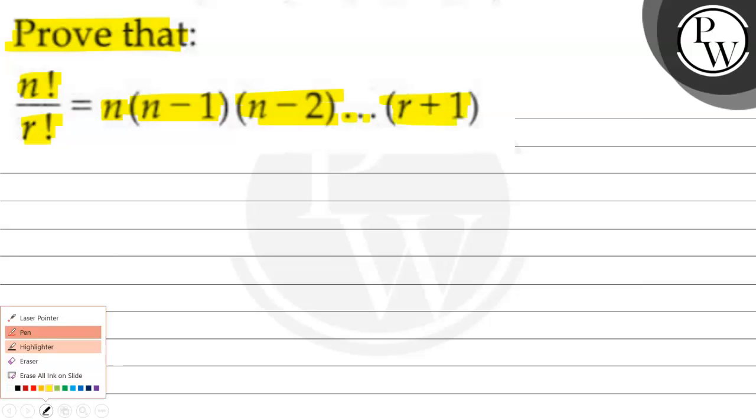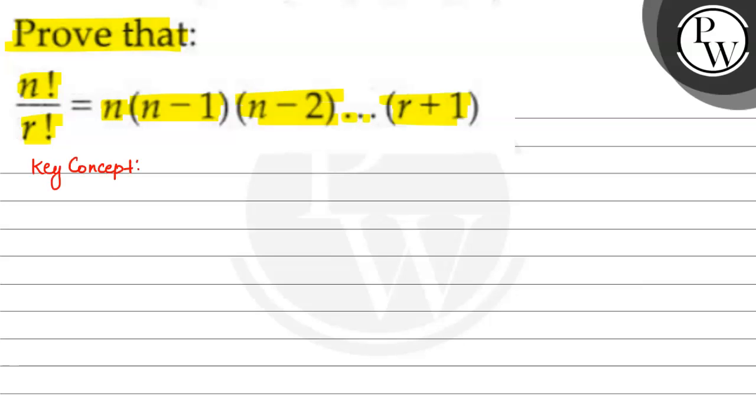Ab, let us know. This is key concept. I have to use the key concept. Well, this is factorial.